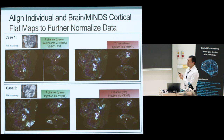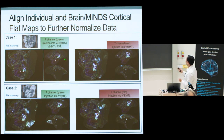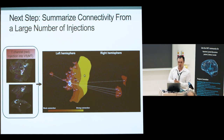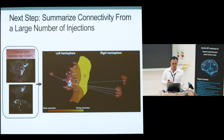We use this information by aligning the data in the cortical flat map space. 2D flat map alignment is easier than full 3D. This is the final result for two injections per brain across two cases — you can see the injection sites on the cortical flat map with anterior-posterior and superior-inferior axes. From this image data you can quantify connectivity further and look at summaries of connectivity within and across hemispheres.